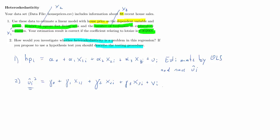What we want from this auxiliary regression is the R-squared. The test statistic, called an LM test, is calculated as n times the R-squared, where n is the number of observations — in our case 88. So the test statistic is 88 times the R-squared from the auxiliary regression in step 2, not the R-squared from the original model in step 1.